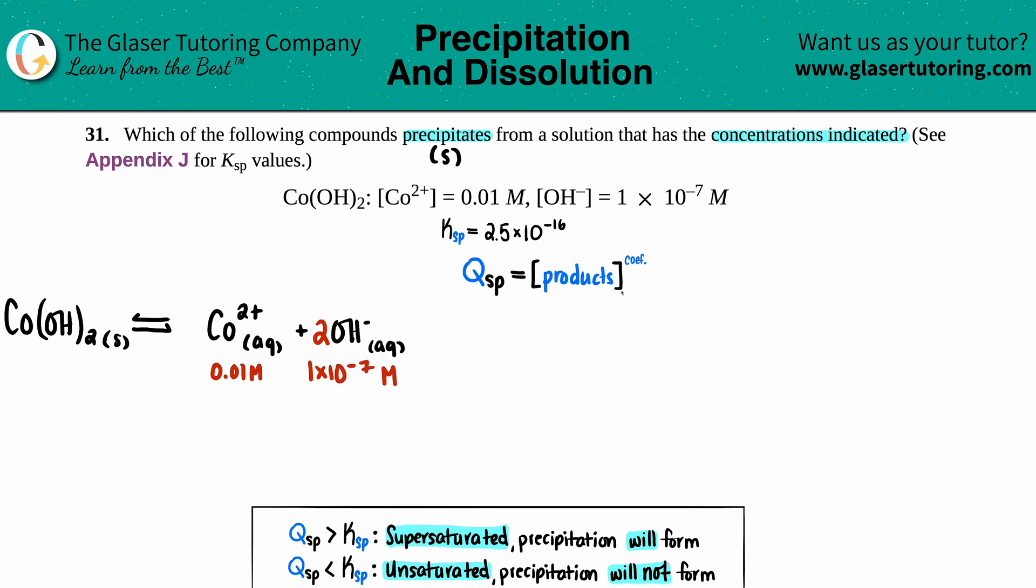It equals those products raised to the coefficients. Qsp equals concentration of Co2+ times the concentration of OH-. We're going to raise the hydroxide to the second power because I see a 2 in front of the OH.